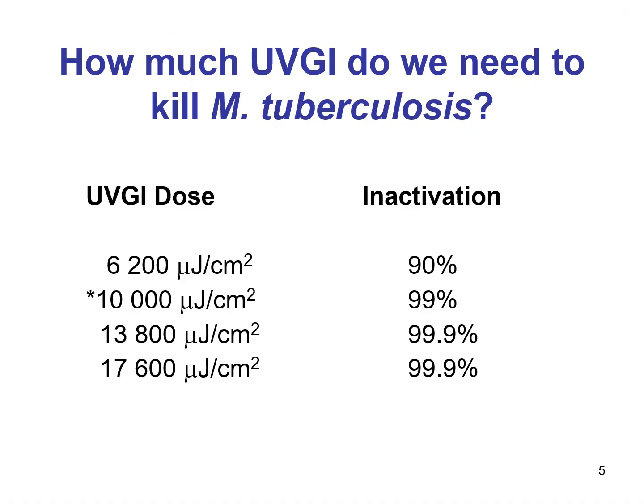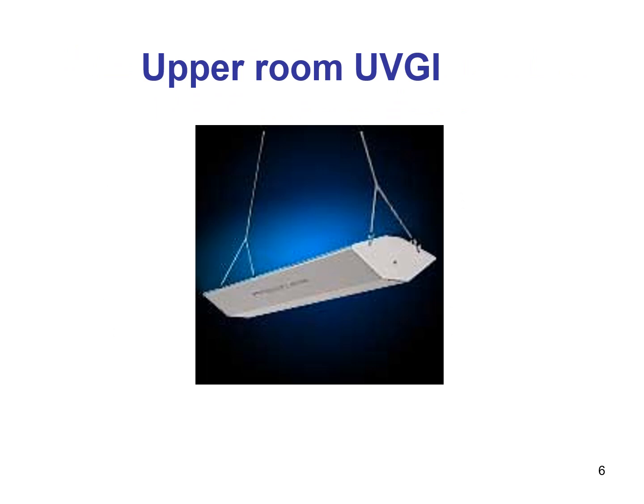The effectiveness of UVGI increases with the intensity of the radiation, measured in microjoules per centimeter squared. Effectiveness also increases with the wavelength of exposure and proximity of the lamp to droplet nuclei. The installation of upper room UVGI devices in ventilated rooms has the potential to reduce TB transmission.